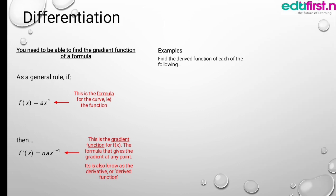Then another example. Find the derived function of each of the following. For f(x) equals 1 over x squared, it must first be written in the form ax to the power n. So f(x) equals x to the power minus 2, and the derived function gives f'(x) equals minus 2x to the power minus 3.